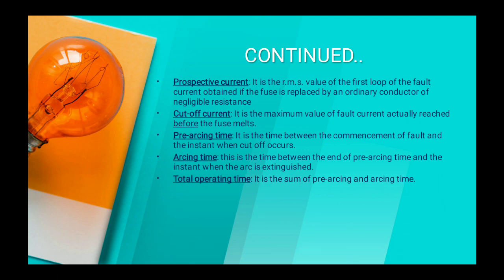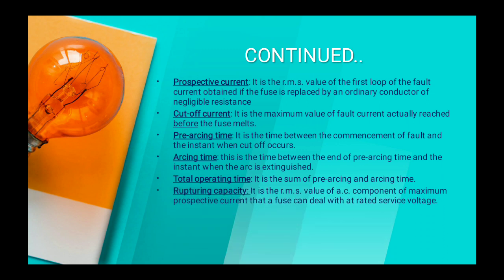Total operating time is the sum of pre-arching time and arcing time. Rupturing capacity is the RMS value of the AC component of maximum prospective current that a fuse can deal with at rated service voltage. So it is the root mean square value of the alternating component of maximum prospective current that a fuse can handle at rated service voltage.